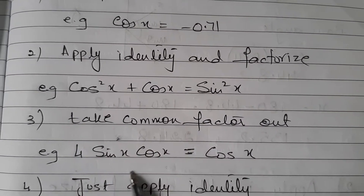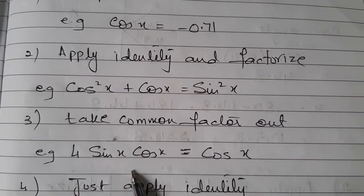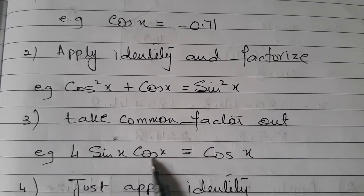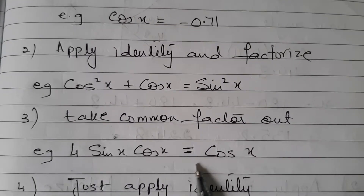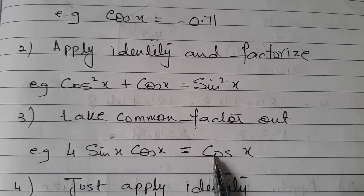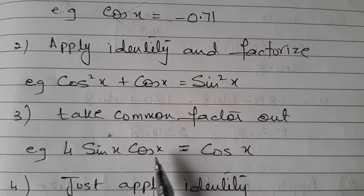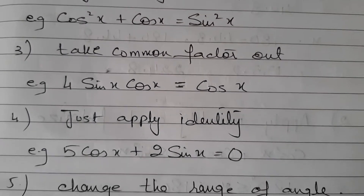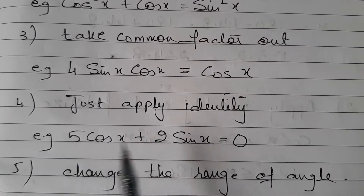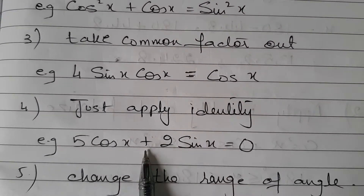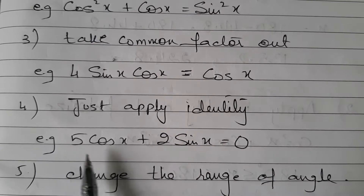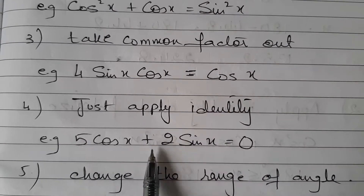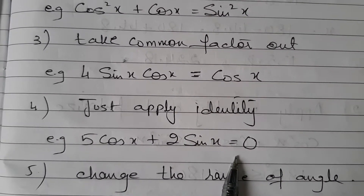There are also types when you have to take a common factor out. For example, 4 sin x cos x = cos x. Then there are cases where you just have to apply an identity, such as: 5 cos x + 2 sin x = 0.